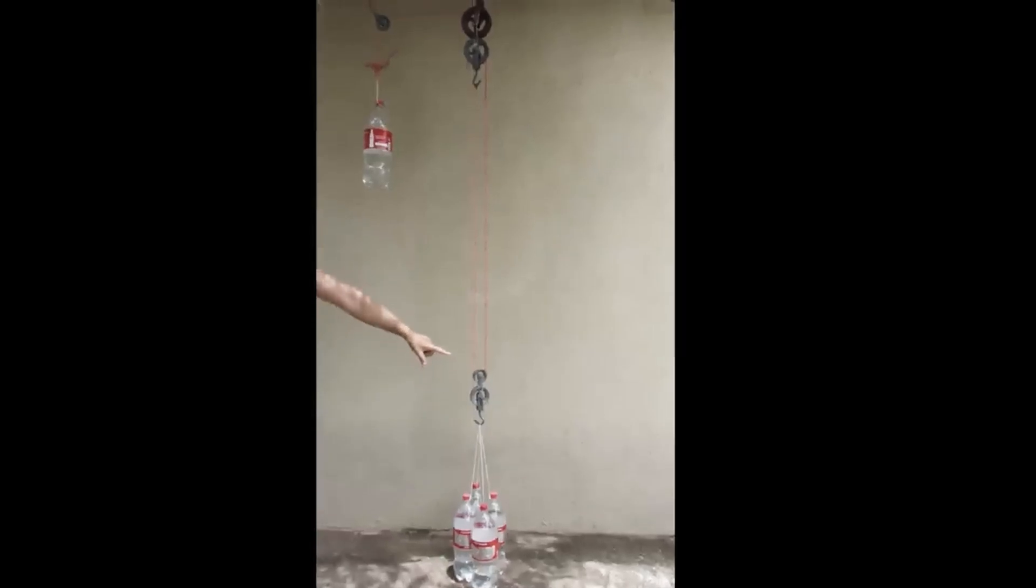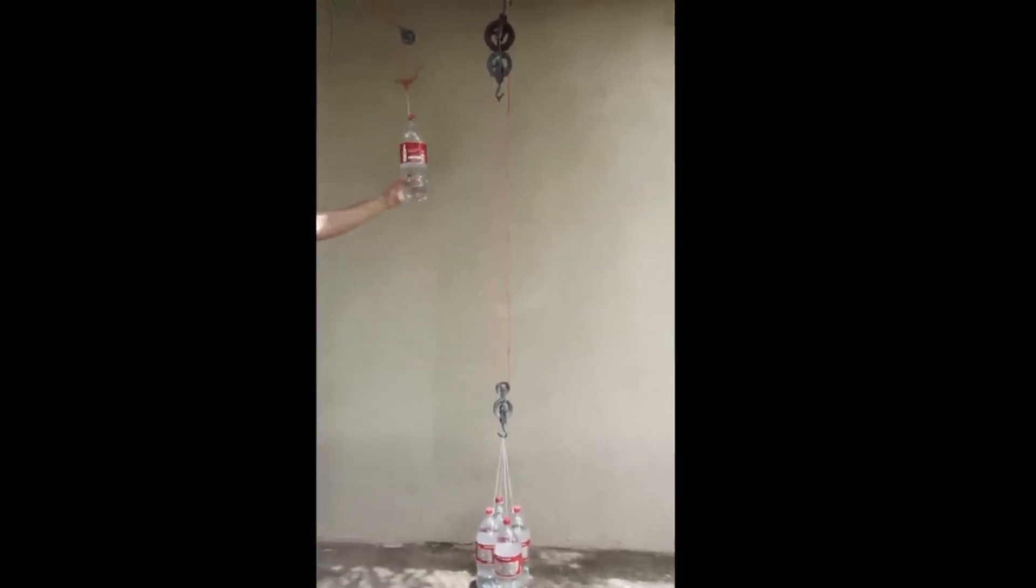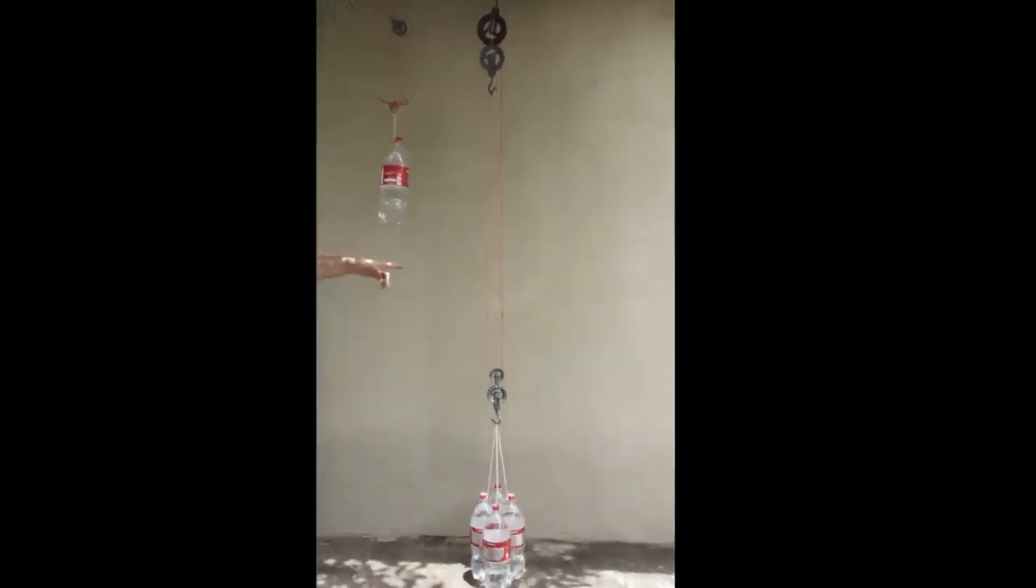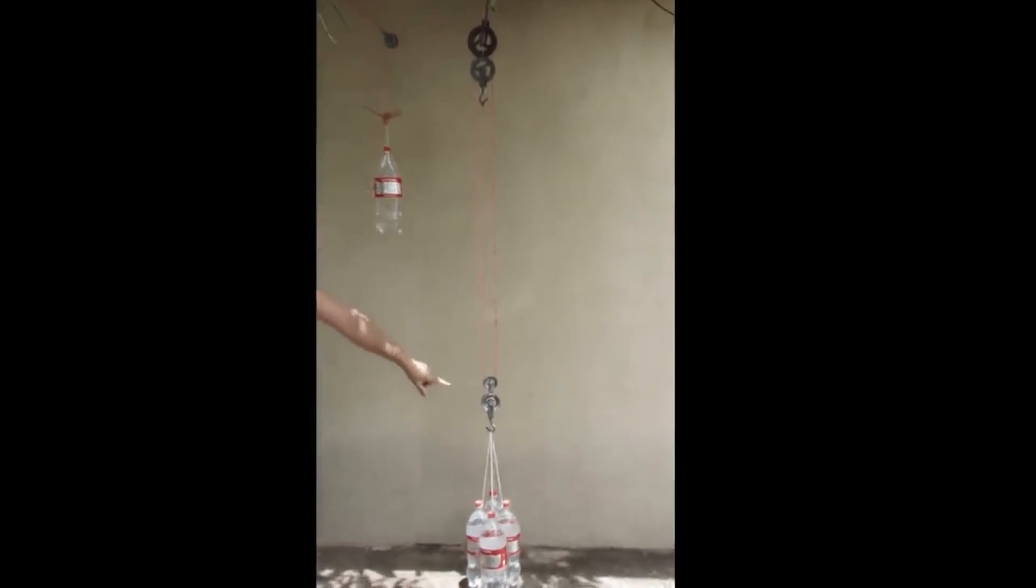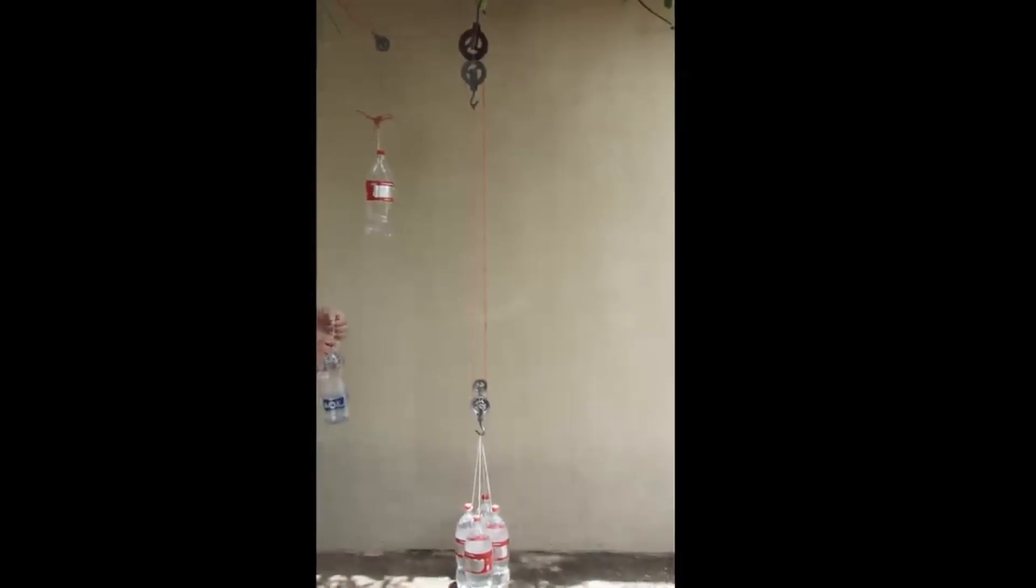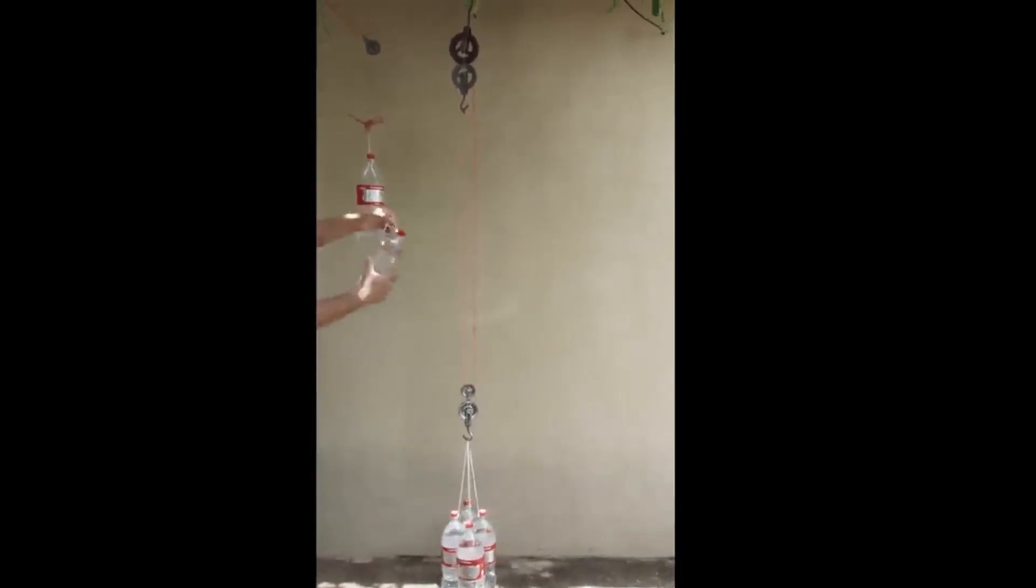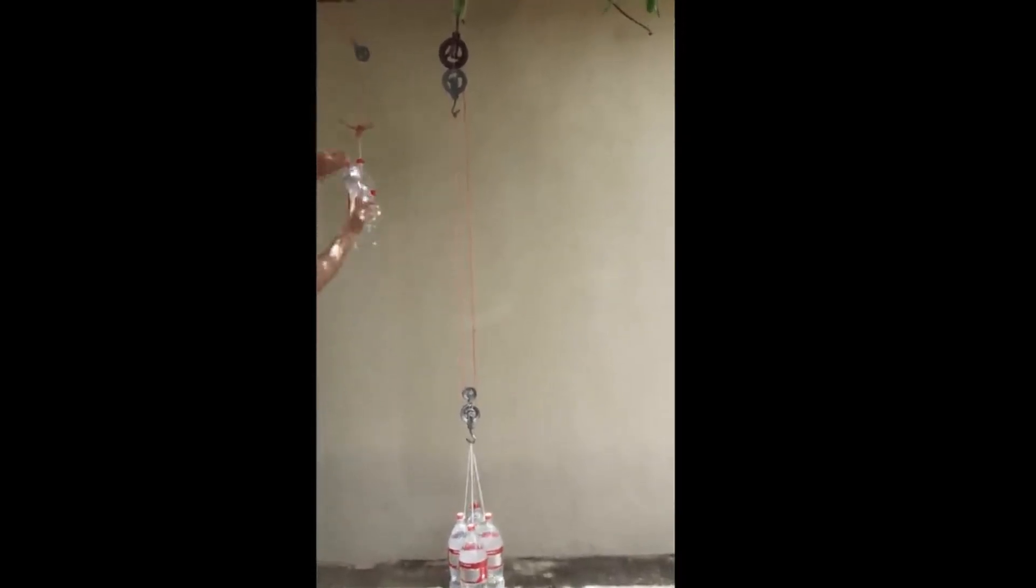Well, guys, the idea is that these four bottles here would be lifted by this single bottle up here. Well, the system was unable to do this. This is due to the fact that we forgot to consider that there is friction between these pulleys. So to counterbalance the effect of this friction, I will add this extra volume of water here, about one liter. I will hang it here, and now we will cancel out the effect of this friction and see if it works.